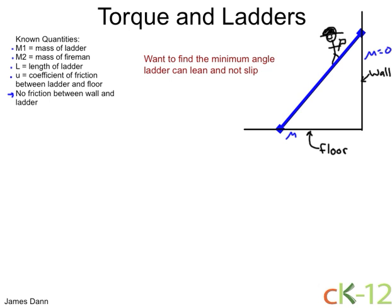What do we want to find? We want to find what is the minimum angle that the ladder can have without slipping. Let's label this angle here and call it theta. Anything smaller than this theta and the ladder slips.